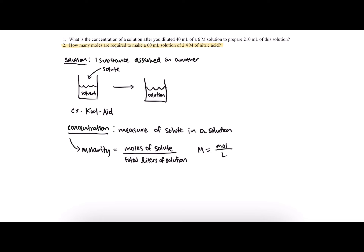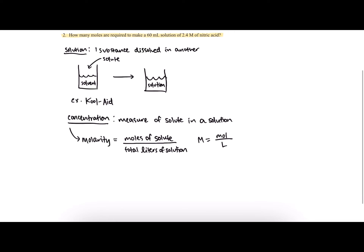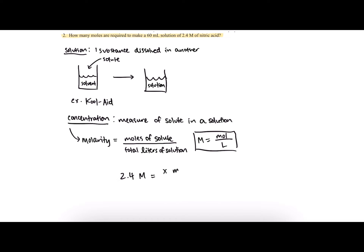Now we are prepared to answer Apply Your Learning question number 2. The question asks: how many moles are required to make a 60 milliliter solution of 2.4 molar nitric acid? We know the concentration is 2.4 molar, so we can use the molarity equation and plug in 2.4. We don't know the moles of solute, so we mark that as x.